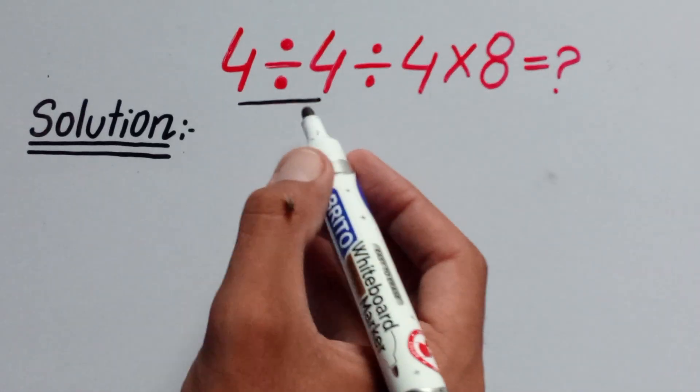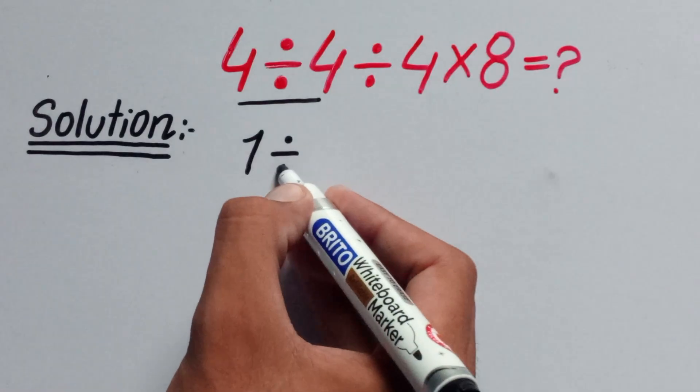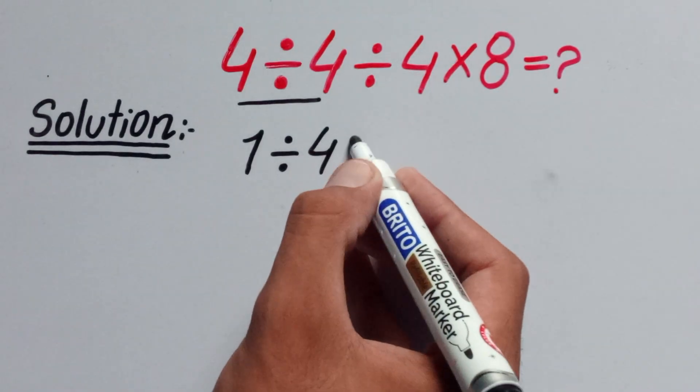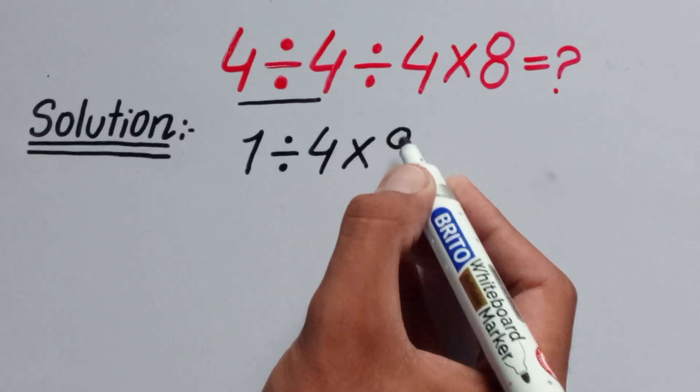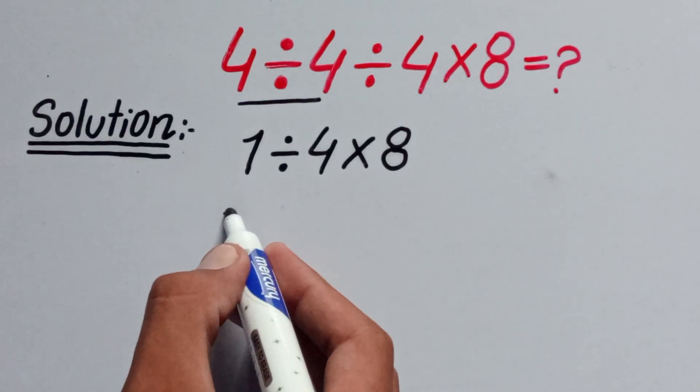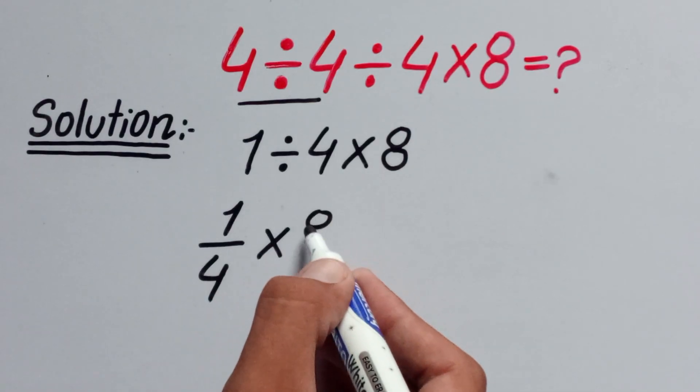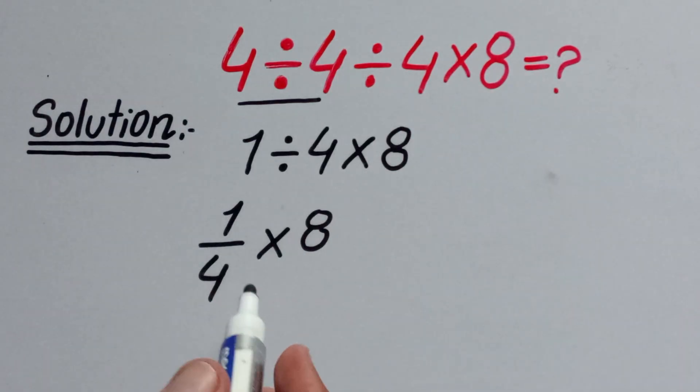So 4 divided by 4, which is equal to 1, divided by 4 times 8. Now here I can write it as 1 divided by 4 times 8. Here, 4 and 8 cancel with each other.